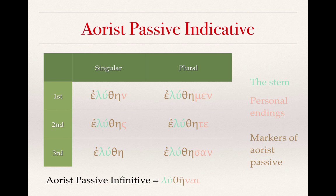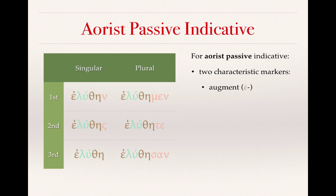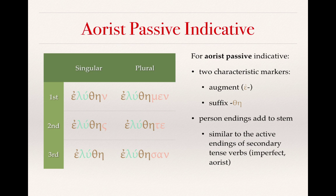With the aorist passive indicative forms, let's add a few notes about things to look for. First, you'll see that in these verbs there are two characteristic markers: the augment at the beginning, the epsilon, and the suffix theta-eta. On to that suffix we add personal endings. These personal endings are very similar to the active endings of secondary tense verbs — similar to the imperfect active indicative or the aorist active indicative. But the augment and the theta-eta are what clearly tell us we are in the aorist passive indicative.